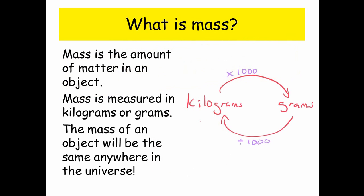So what is mass? Well mass is the amount of matter in an object. Mass is measured in kilograms or grams. And the mass of an object will be the same anywhere in the universe.